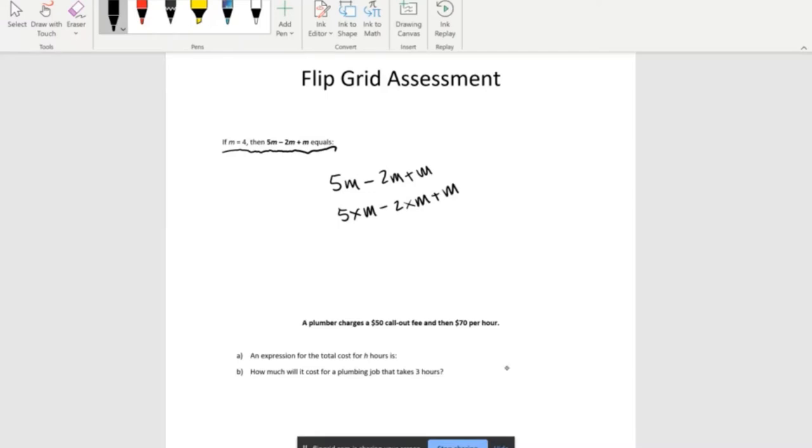5 times m minus 2 times m plus m. We have a multiplication symbol here because between every coefficient, which is the number, and a pronumeral, which is the letter, we have a multiplication symbol. When we expand them, the multiplication symbol starts to show. So we have 5 times m minus 2 times m plus m.